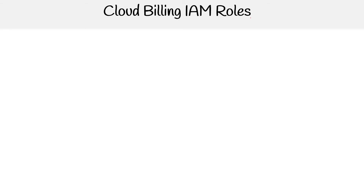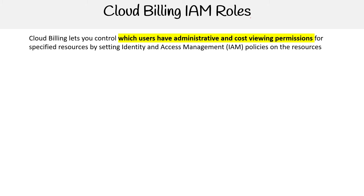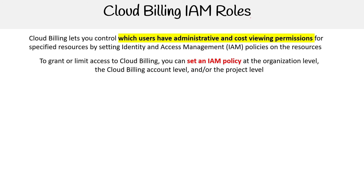Hey, this is Andrew Brown from ExamPro, and we're looking at Cloud Billing IAM roles. Cloud Billing lets you control which users have administrative and cost viewing permissions for specified resources by setting Identity and Access Management IAM policies on the resources. To grant or limit access to Cloud Billing, you can set an IAM policy at the organizational level, the Cloud Billing account level, or the project level.